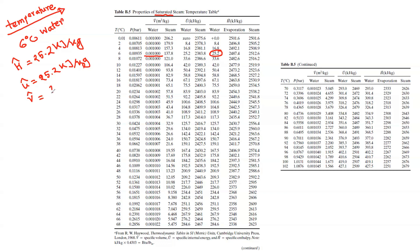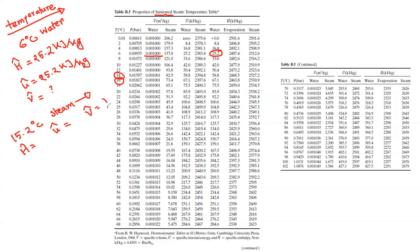Interpolation is very important. If you want to see the volume of water, you can see the volume of water. I will show you the same as 32 degrees Celsius. This is our specific volume of water.